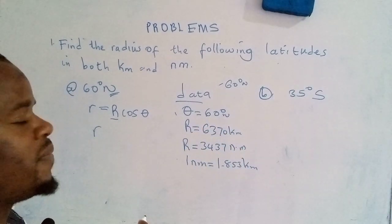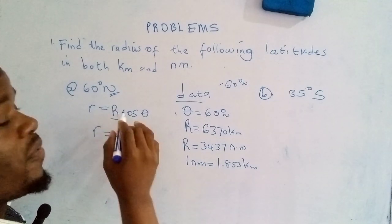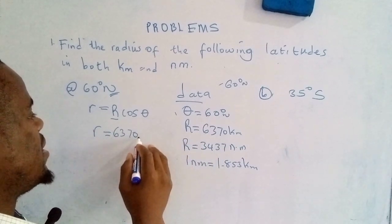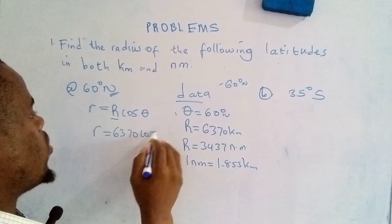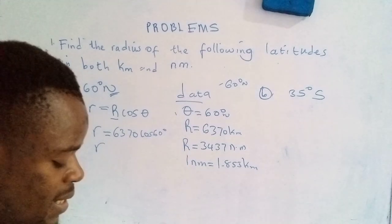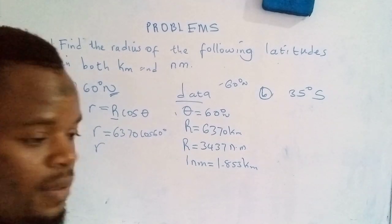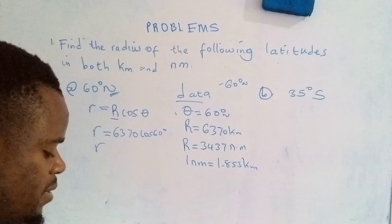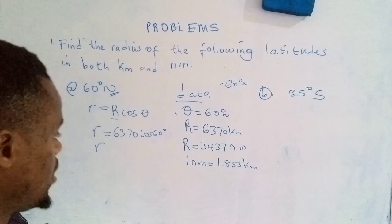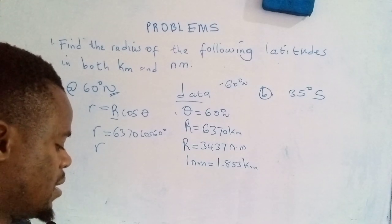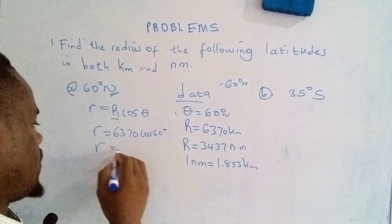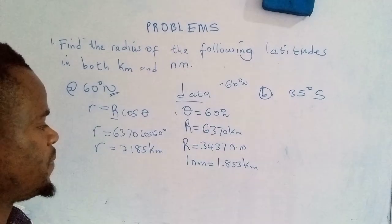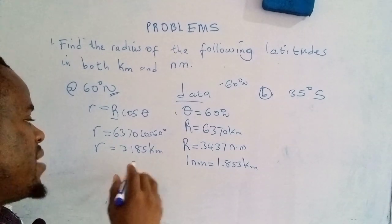Radius of the latitude is equal to, we are resolving this in kilometers, so that would be 6370 then cos 60 degrees. You simply punch these on the calculator, that's 6370 cos 60 degrees. That gives me 3185 kilometers.